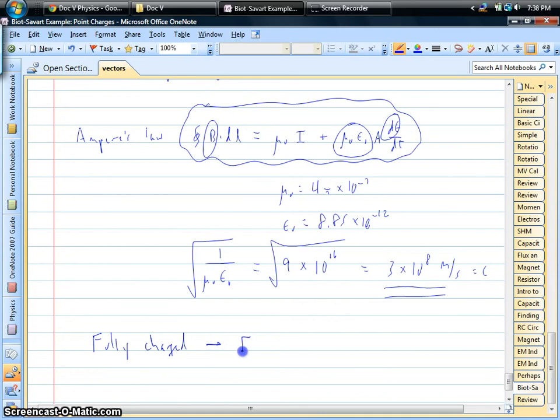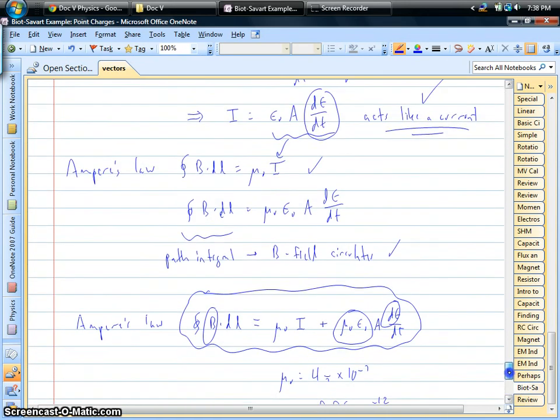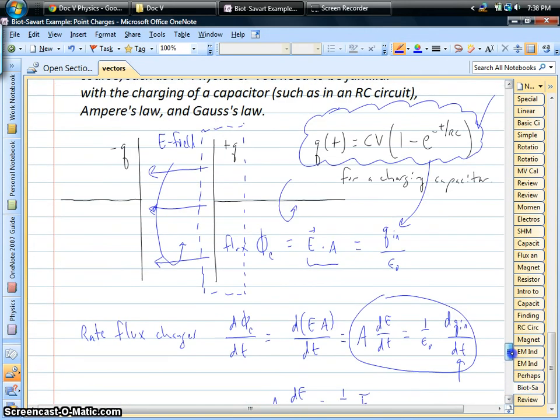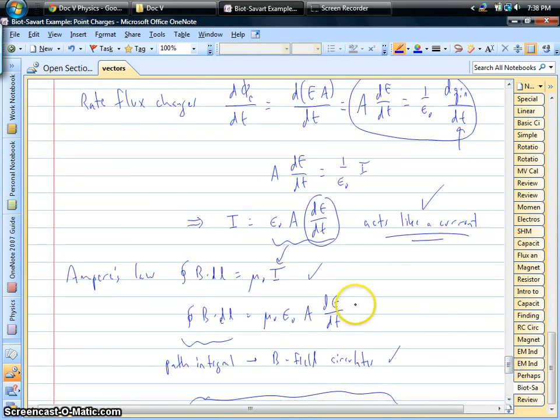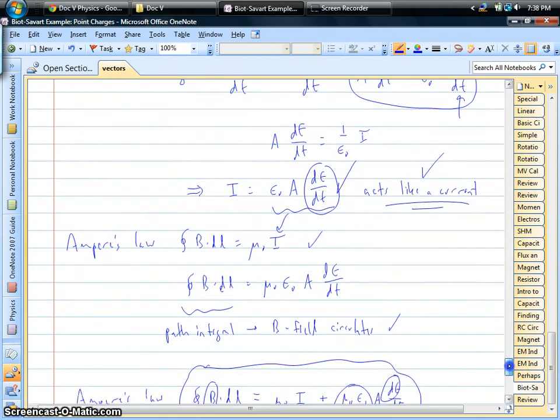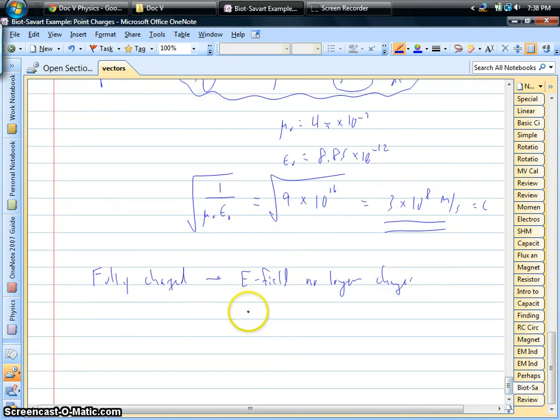Notice two, what happens to capacitors when they are fully charged? Well, what happens is the electric field no longer changes, and therefore, you have flux, you have electric fields shooting that gap right there, but the rate of change is zero and it doesn't act like a current anymore. And so, when the E field is no longer changing, the current stops and capacitors kill current after a long time.